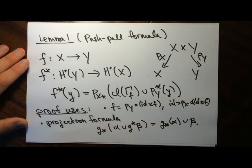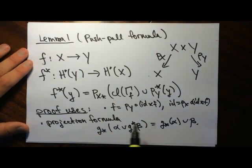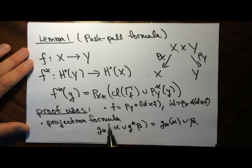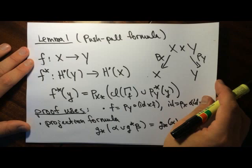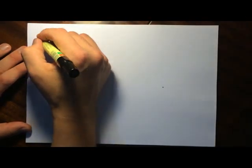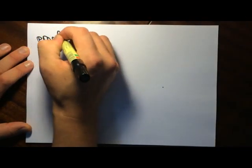These are tautological, and then there's this projection formula which follows from the formalism with the trace and Poincaré duality. This is another way you can define the pushforward map. Let me just give the proof now.